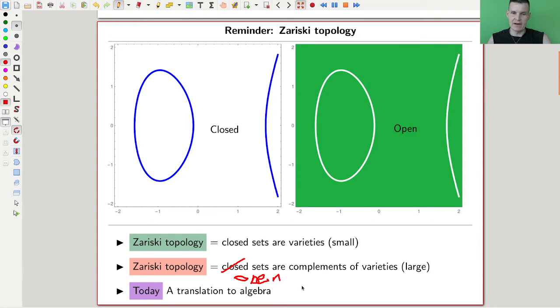The open sets are complements of varieties. And the closed sets are really tiny, they're the varieties like this picture here. The open sets are complements. So that's the Zariski topology.